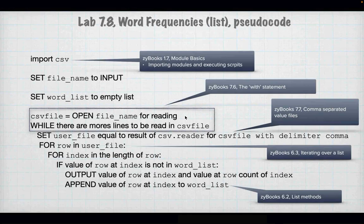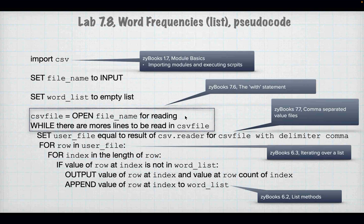Word frequencies — this is lab 7.8. You're going to have a CSV file as input. You'll have a word_list that's empty. Open the CSV file for reading — this is a great place to use the with statement. As long as there are lines in the CSV file, set a variable called user_file equal to the result of csv.reader. Then for each row in user_file, for each index in the length of the row, if the row at index is not in the word_list, output the value and the count, then append it. That's what you have to do for lab 7.8, and it's very much like the slide we looked at.